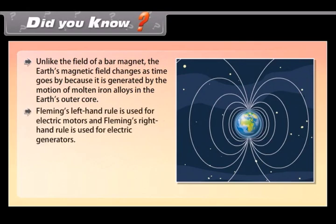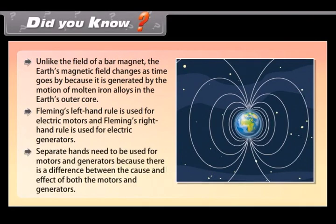Fleming's left hand rule is used for electric motors and Fleming's right hand rule is used for electric generators. Separate hands need to be used for motors and generators because there is a difference between the cause and effect of both the motors and generators.